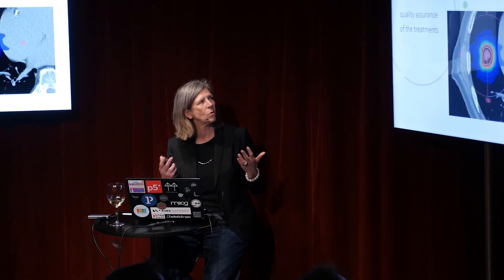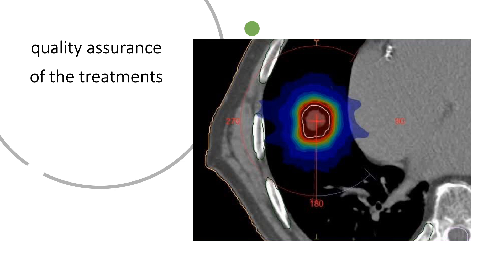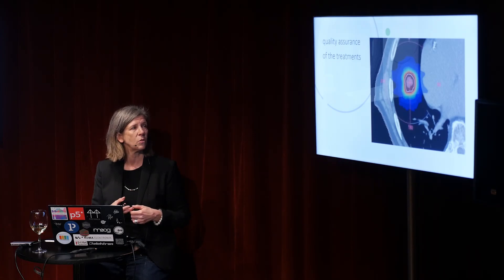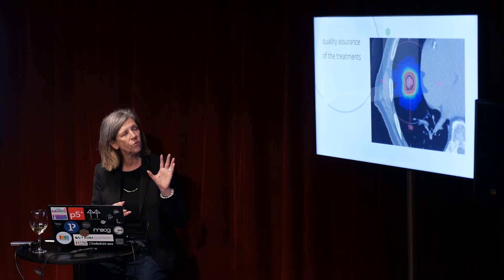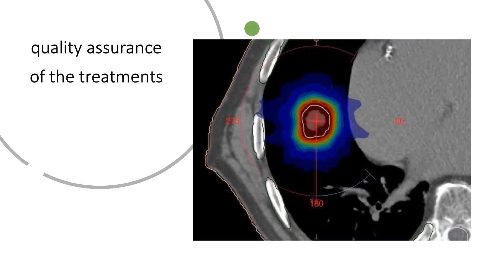On the other end of the spectrum, there's the quality assurance of each individual treatment — each treatment goes through the hands of the physicists. Here you see an example of a very focused treatment on a lung tumor: the big thing at upper right is the heart, you have part of the vertebra, the ribcage, the lung in between, and a dot in the middle — that's the lung tumor. You see a very focused treatment: what we call a stereotactic body radiotherapy treatment on a lung tumor.